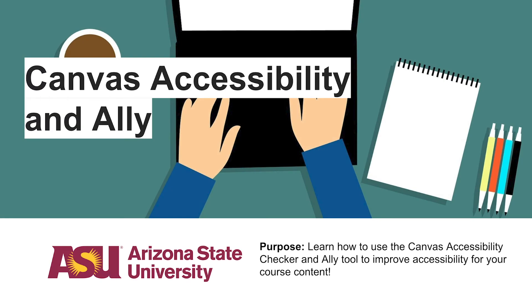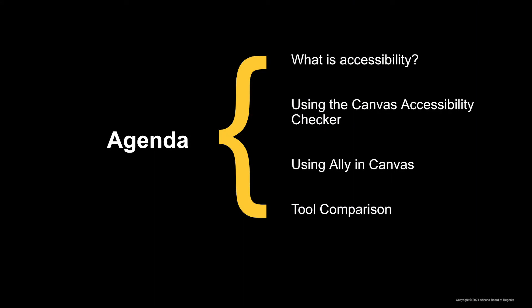Hello and welcome. In this session, we will cover the Canvas Accessibility Checker and Ally. Both are tools that are used to increase the accessibility of course materials in Canvas, so that users with screen readers or disabilities can view and interact with content appropriately. We will cover an overview on how both tools work in checking the accessibility of materials in a Canvas course.